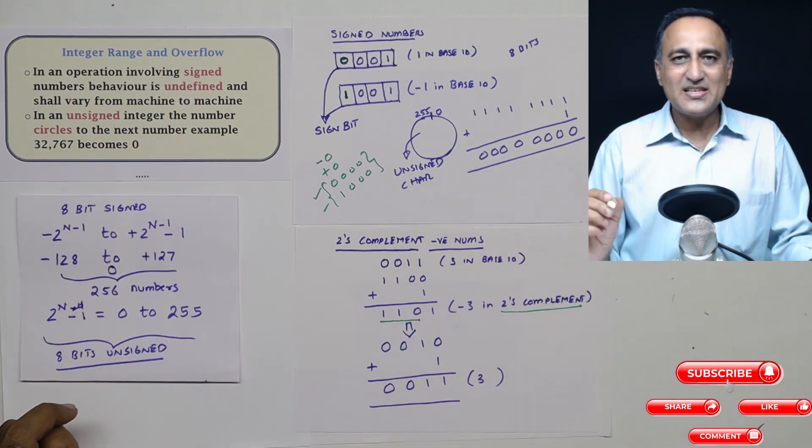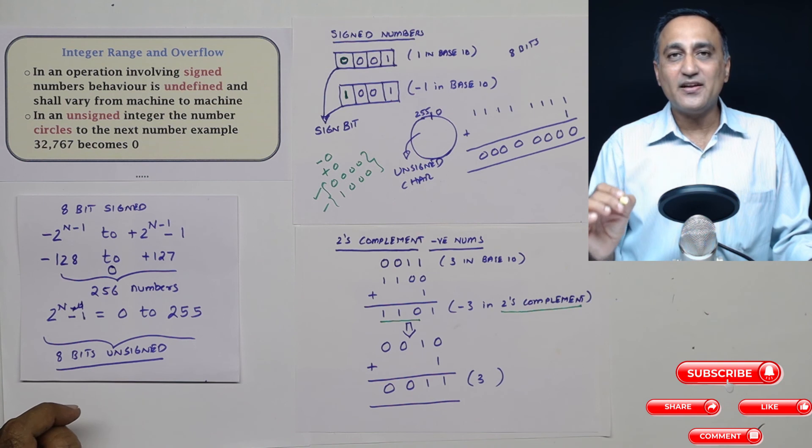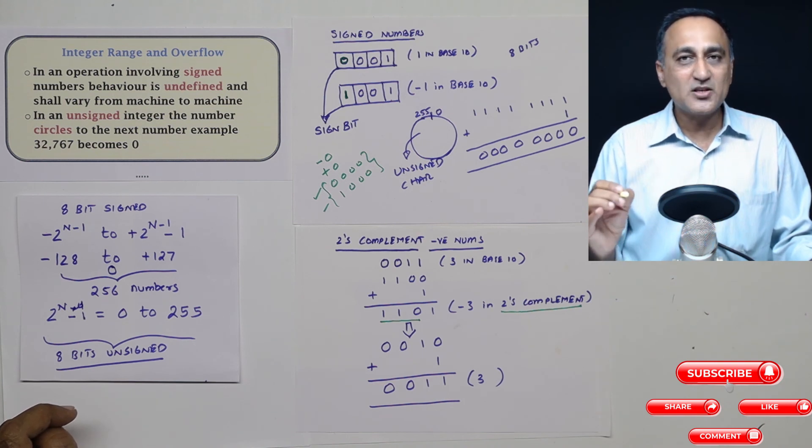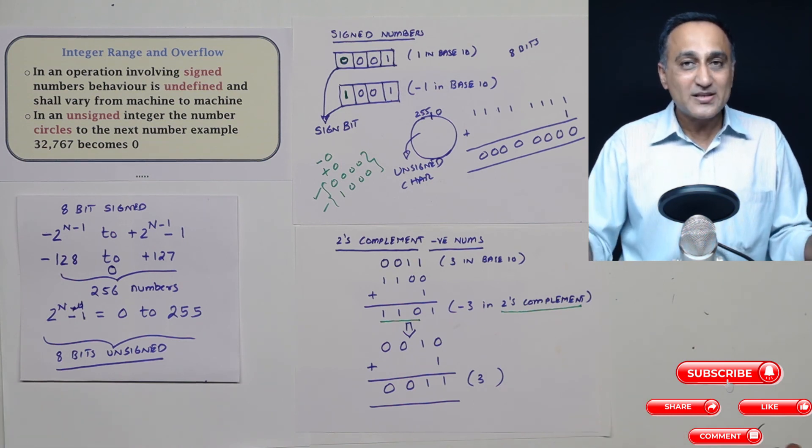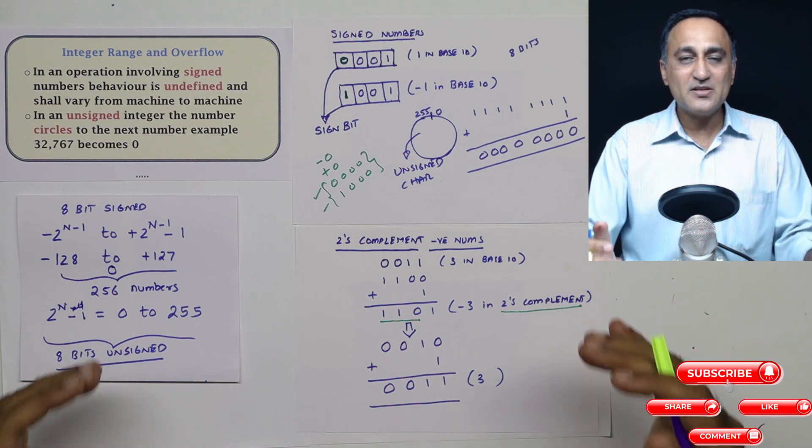And this is somewhere where C is not really great. It doesn't really warn you when there is an overflow or underflow. The program will invariably crash. So it is your job to keep track of what is the limit or what is the range of number the program is working on.